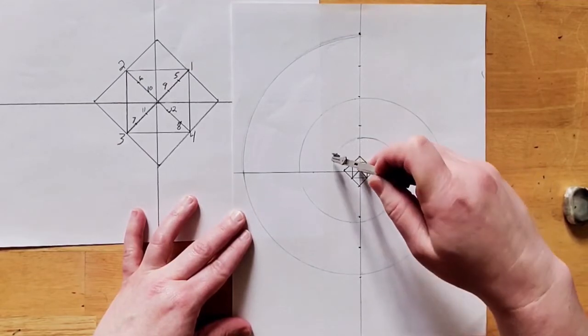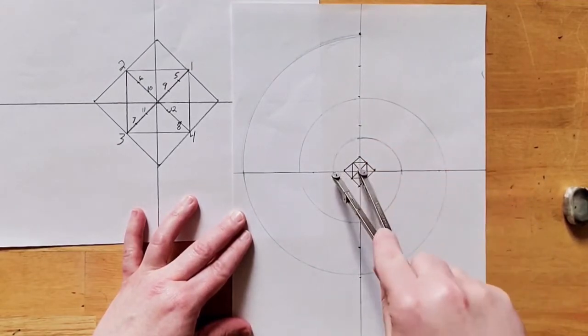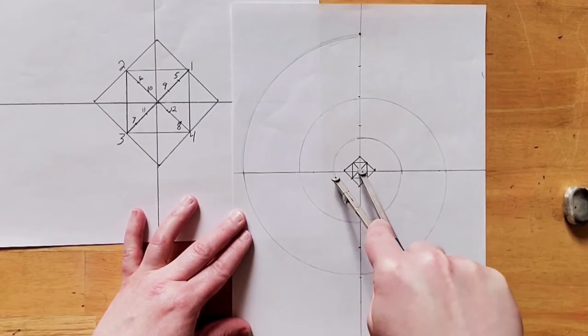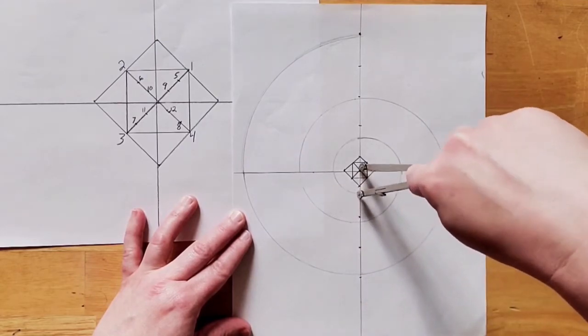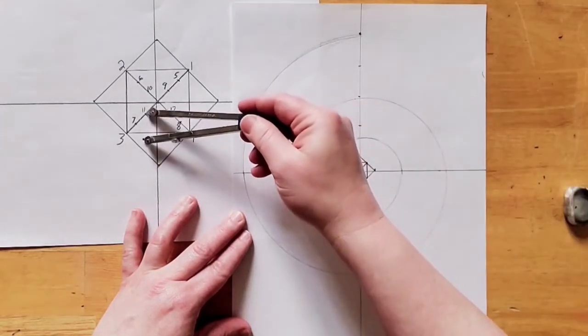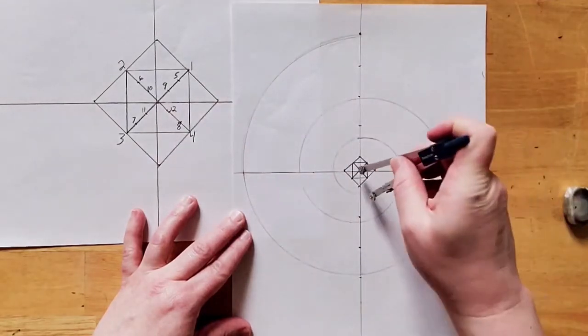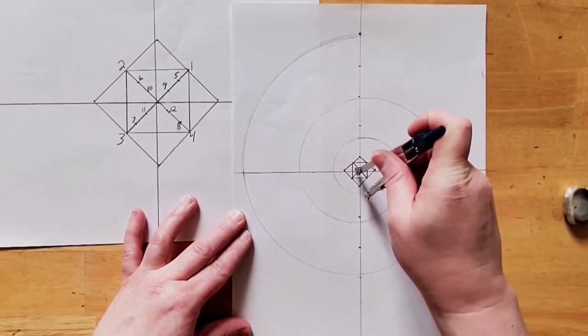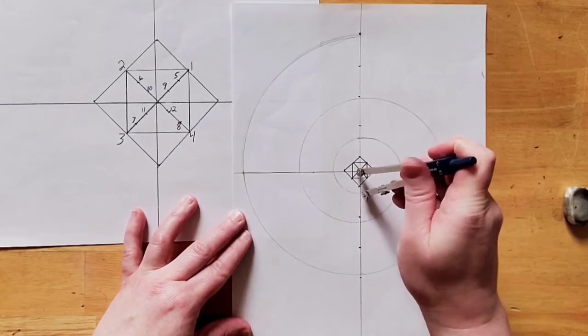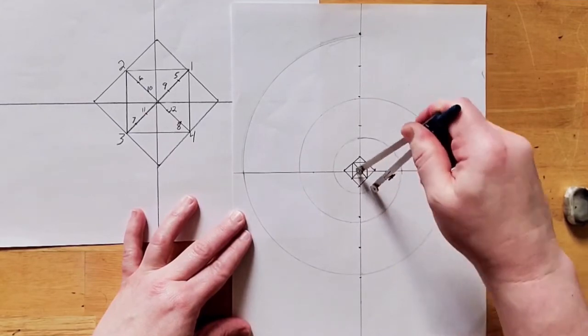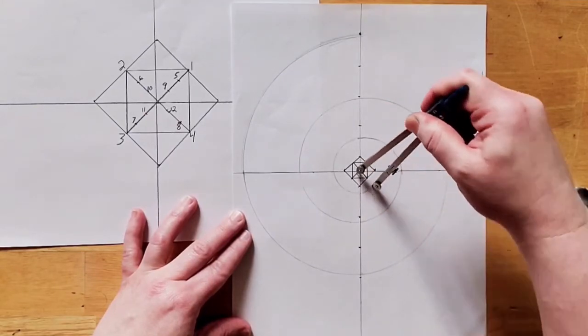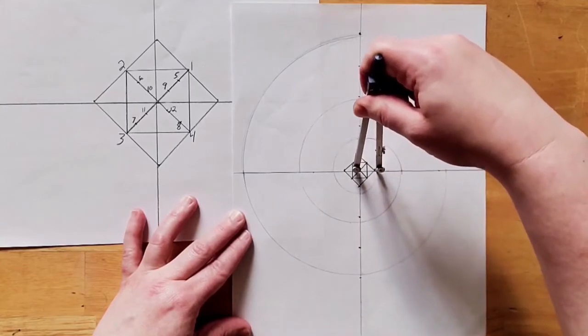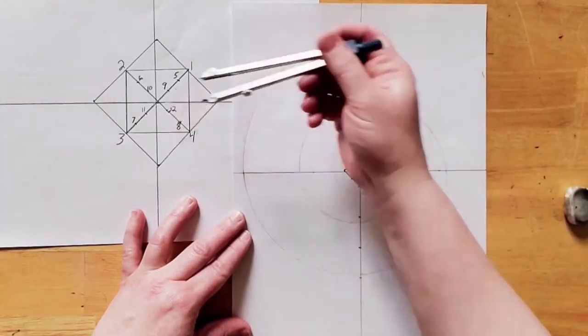Now we move to ten. As the spiral gets tighter, it may be a little easier to hold the compass. Now we move to eleven. Don't forget to shorten the compass.